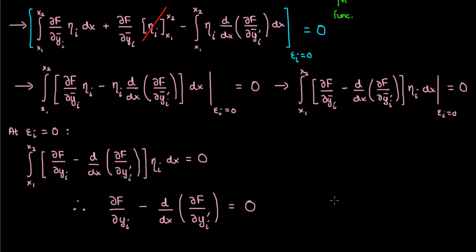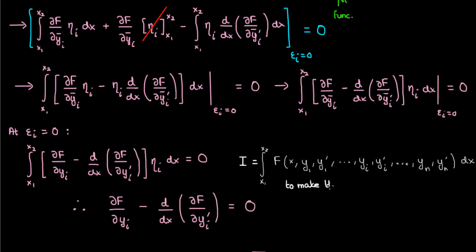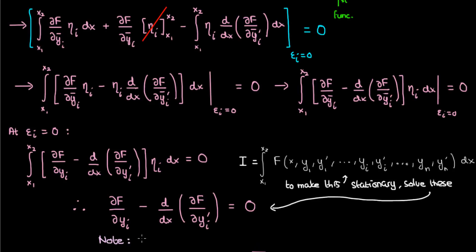This is the Euler-Lagrange equation for multiple dependent variables. To determine the y's that make this functional stationary, we need to solve these Euler-Lagrange equations — but instead of solving just one equation to find a single stationary function, we have to solve n Euler-Lagrange equations to find the combination of n functions which makes capital I stationary. There is one Euler-Lagrange equation for each dependent variable yi, from y1 all the way to yn.